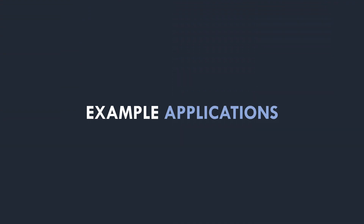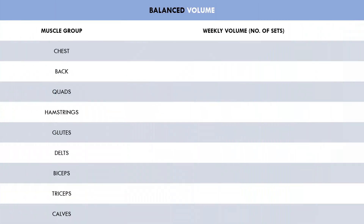Let's now cover some examples of how volume can be allocated in different ways. First, let's explore a general balanced volume distribution. Exact volumes are going to be highly individual, but for this example trainee, we've implemented 12 sets for the chest, back, quads, hamstrings and glutes, and eight direct sets for the delts, biceps, triceps and calves. This is a fairly balanced volume distribution for someone who may not have any specific strengths or weaknesses and doesn't want to particularly emphasize any specific muscle group.